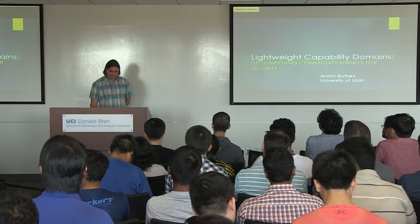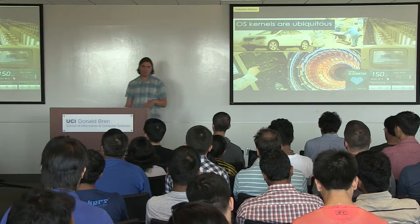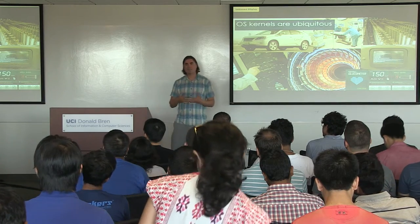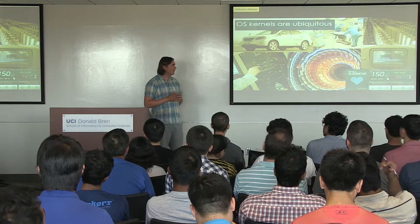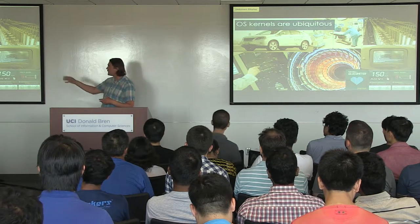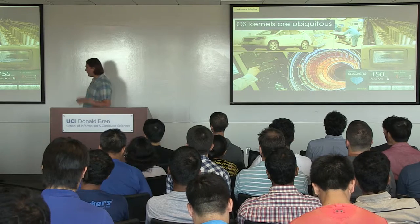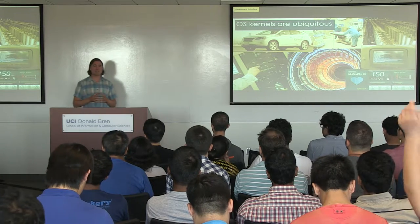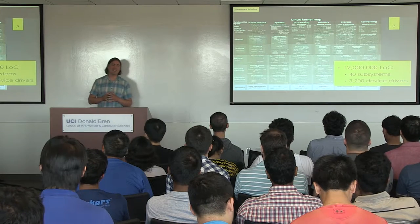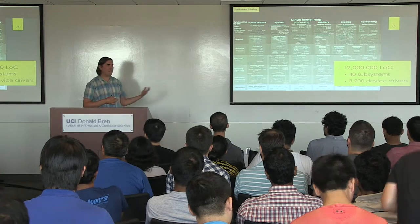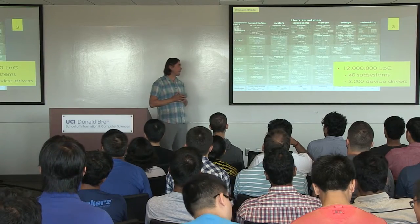We start with the following introduction. We think about the operating system as something that runs in our personal computers. In reality, we're running the same operating system, which is essentially equivalent to Linux, on all these embedded devices and data centers. So it's something like a Google car, a medical device, or your entertainment system on a plane — they all run Linux. Systems were evolving for the last 40 years, and the Linux kernel now has around 40 major subsystems, 20 million lines of code, and 3,000 device drivers.